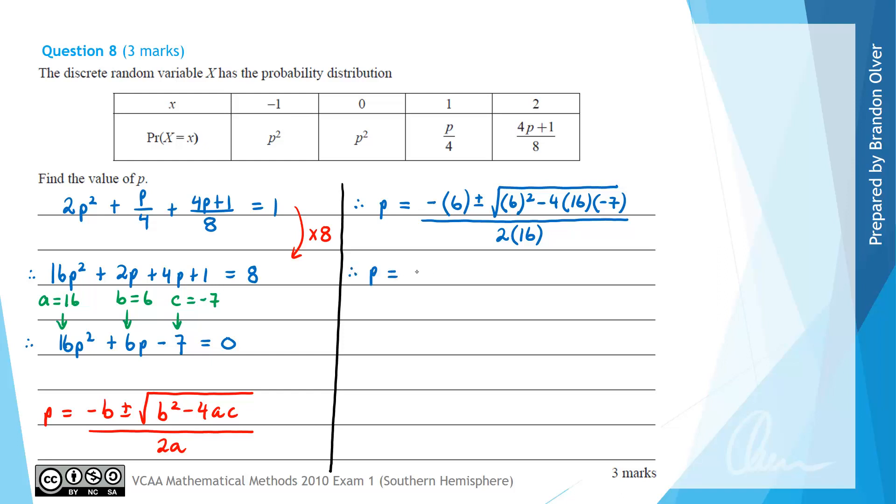Now our job here is simply to simplify that down to see what values we get. So therefore p would equal minus 6 plus or minus, and then this square root we have 6 squared is 36, and then we have subtract 4 times 16 times negative 7. So the two negatives will give a positive, and if you take your time to evaluate that you'll get 448, and then all of that is divided by 2 times 16 which is 32.